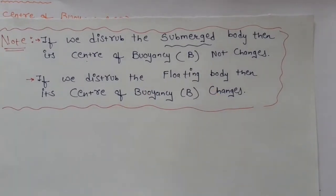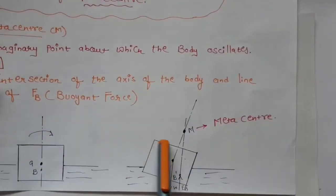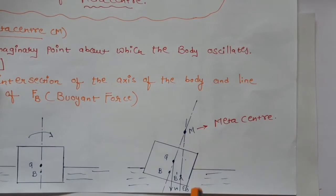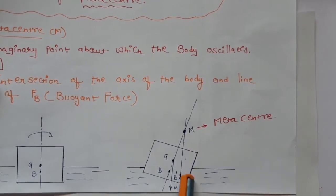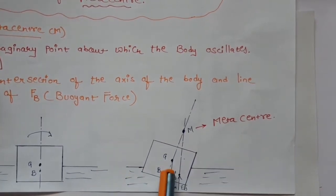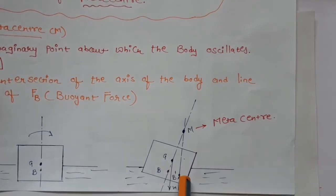As we had seen, this is the floating body. When we disturb this body, its center of buoyancy changes to B dash. First it was at B and after tilting, it is at B dash.